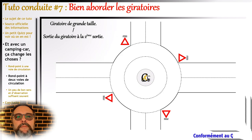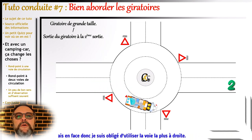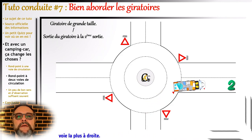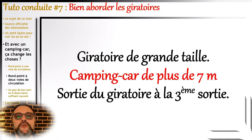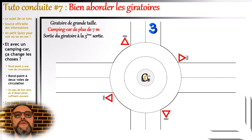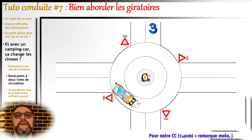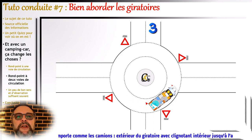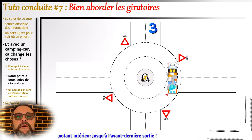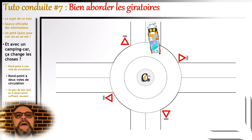Si je dois sortir en face avec mon camping-car, je vais mettre mon clignotant sur la gauche pour indiquer que je reste dans le giratoire, mais j'emprunterai la voie la plus à droite puisque cela est écrit dans le texte de loi. Dans un grand giratoire avec une sortie sur la gauche de mon axe d'entrée, je vais me comporter exactement comme les camions : rester sur la droite, indiquer avec le clignotant gauche que j'y reste — pour que les gens ne viennent pas se rabattre devant moi ni rentrer dans le giratoire en croyant que je vais sortir. Je changerai mon clignotant à l'avant-dernière sortie avant de quitter le giratoire.